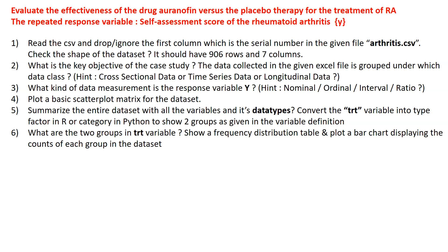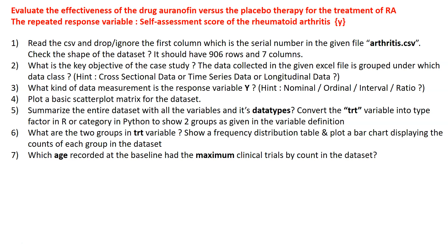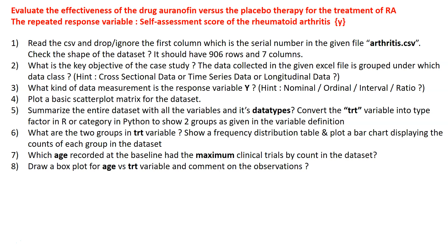Question 8: Which age recorded at baseline had the maximum number of clinical trials by count in the dataset? Question 9: Draw a box plot for age versus TRT (treatment group variable) and comment on observations — such as the average, minimum, maximum, and any outliers, for example whether one particular treatment group shows more outliers compared to the other.